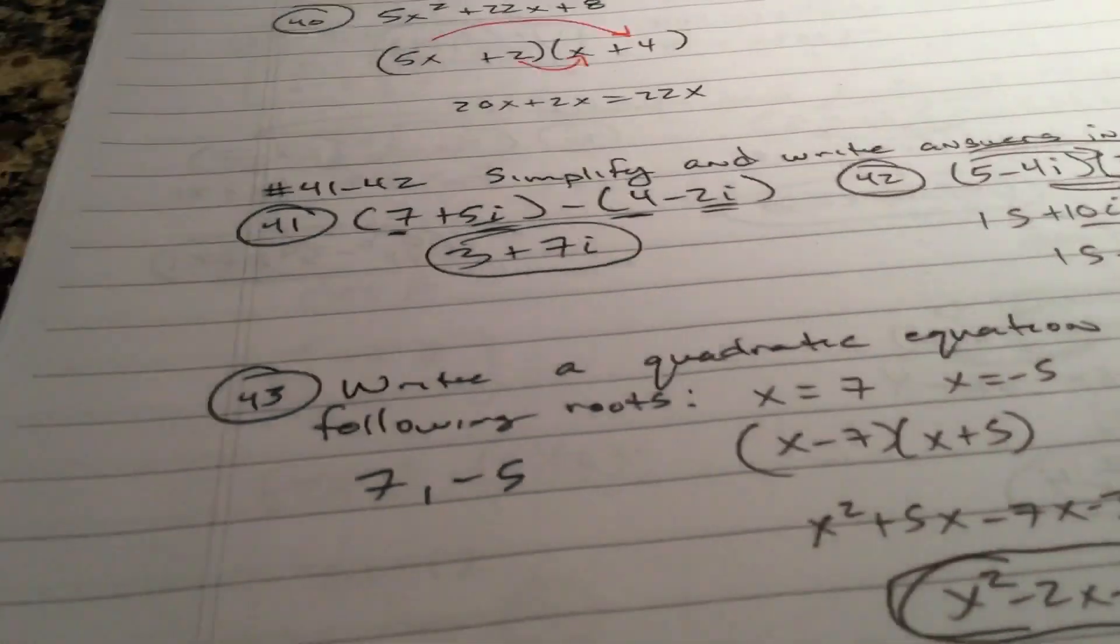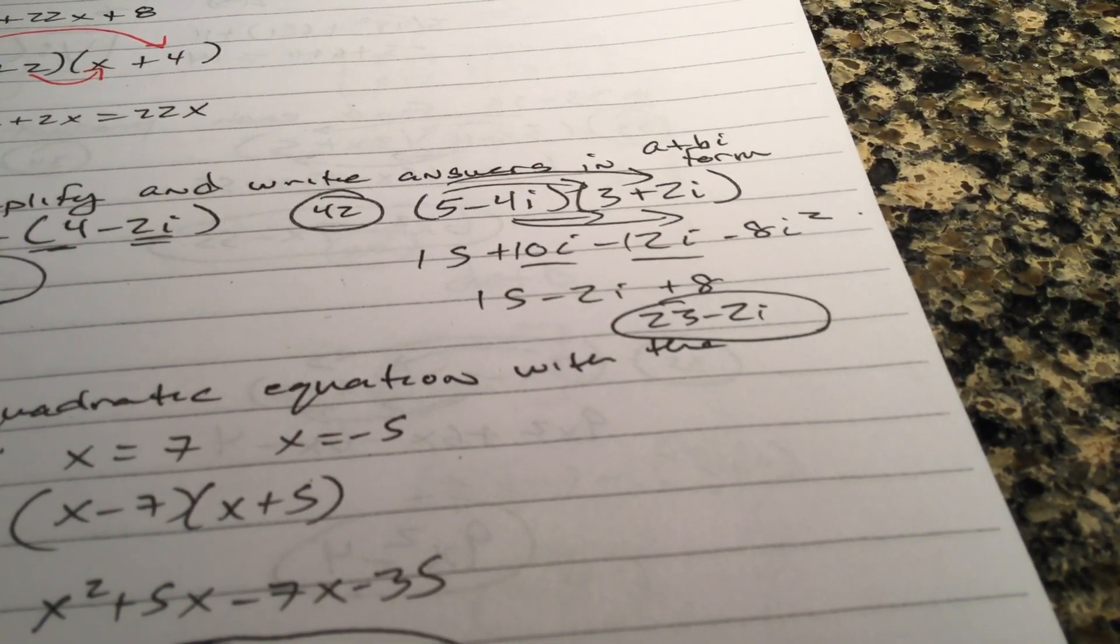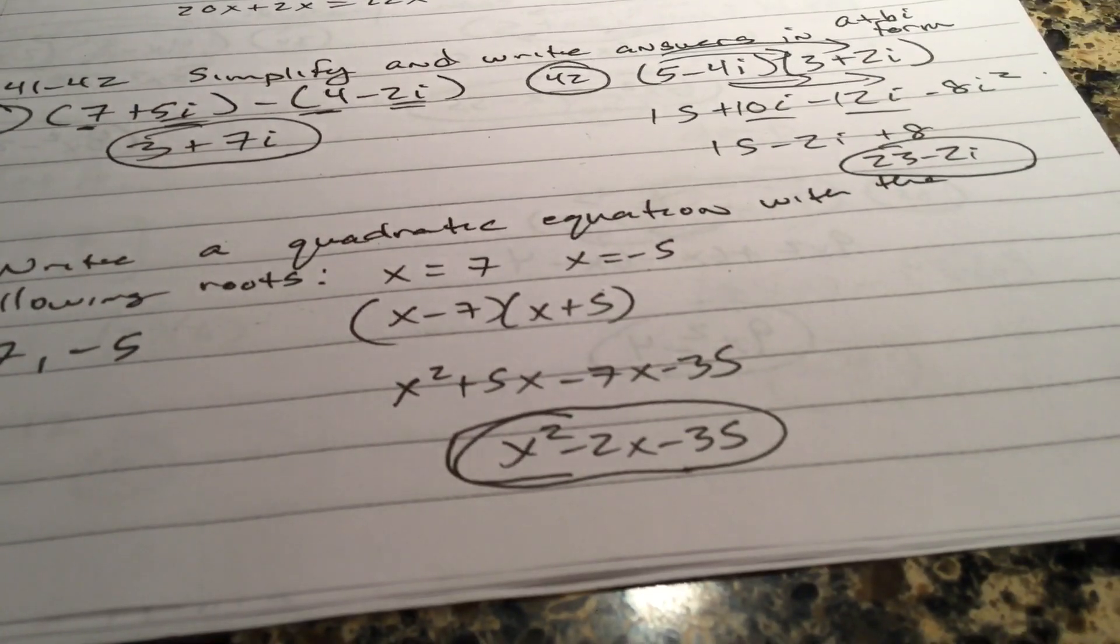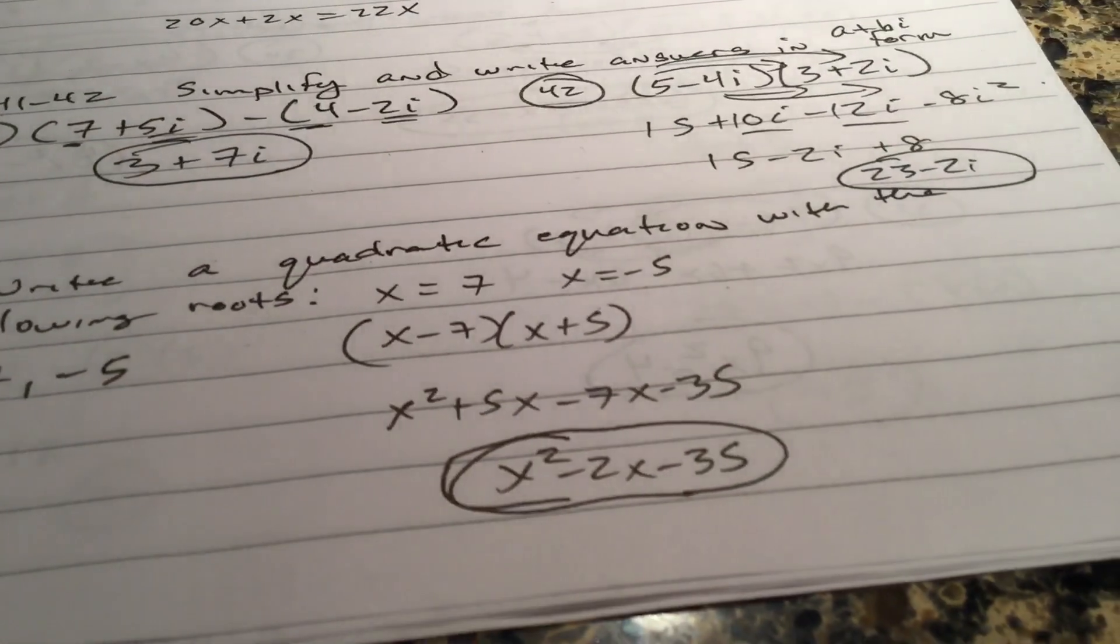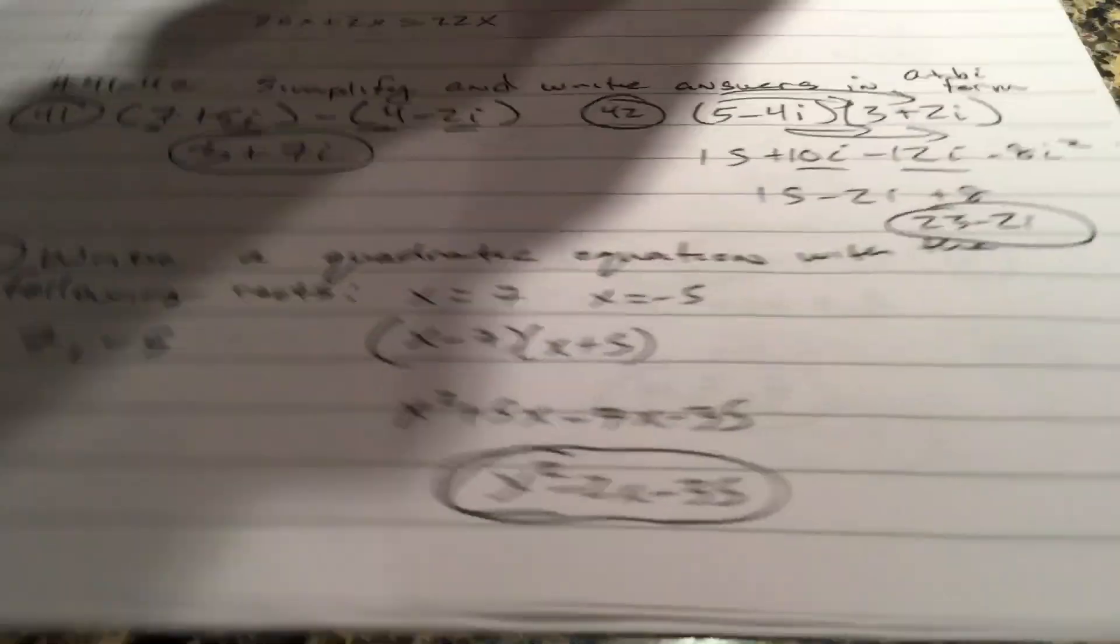Simplify and write answers in a plus bi form. There's 41. First outer inner last. Remember, i squared is a negative 1. There's 42. Given those roots, write the quadratic with the following roots, that is. So x minus 7 times x plus 5 and then foil. All right.